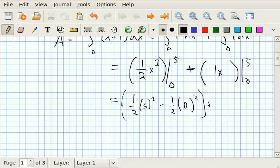And to that, I'm going to add the result from the second definite integral. Well, that's just x, so I put 5 in for x, and subtract what I get when I put 0 in for x.